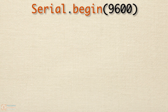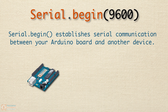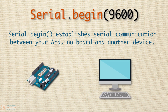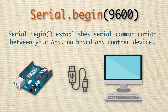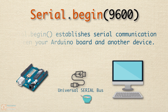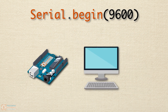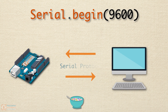So what does Serial.begin() do? Serial.begin() establishes serial communication between your Arduino board and another device. The most common use of serial communication you will establish is between your Arduino and your computer via a USB cable — or should I say, Universal Serial Bus cable. When you have established serial communication between two devices, it allows them to communicate using a serial protocol.